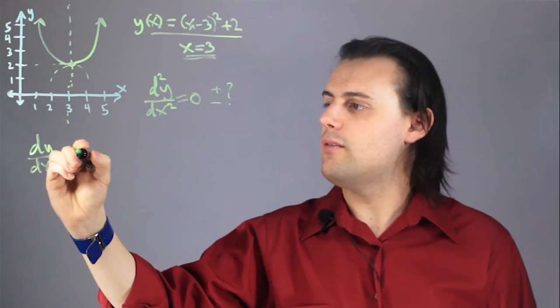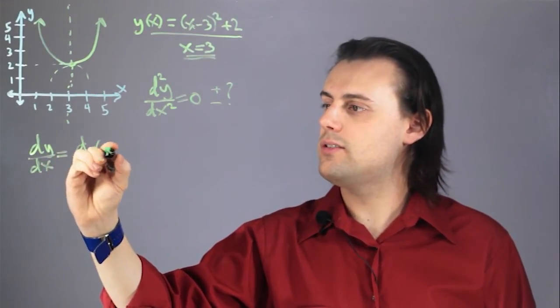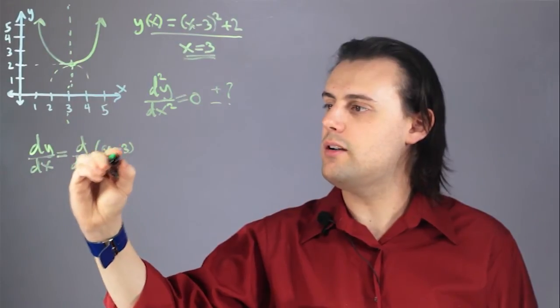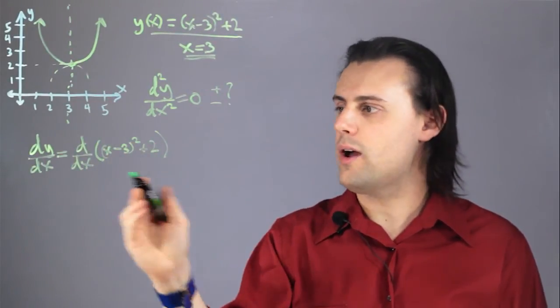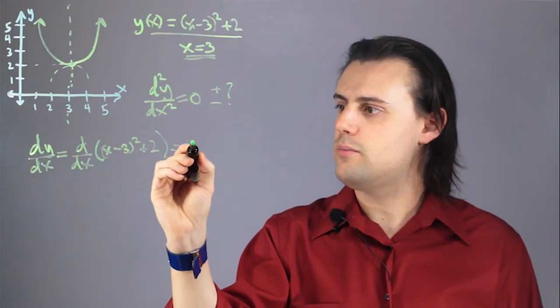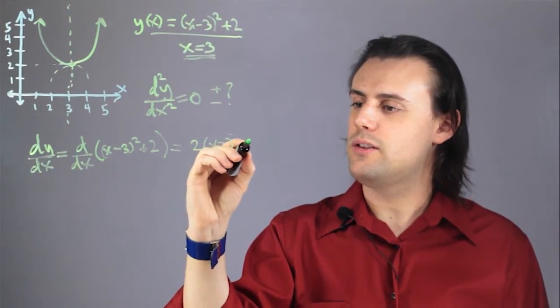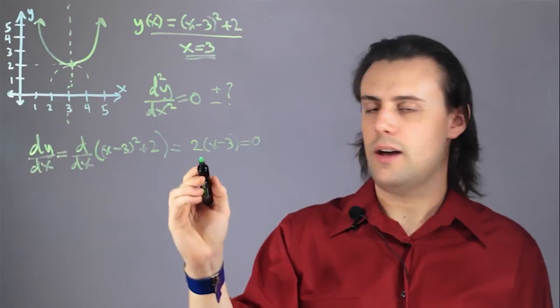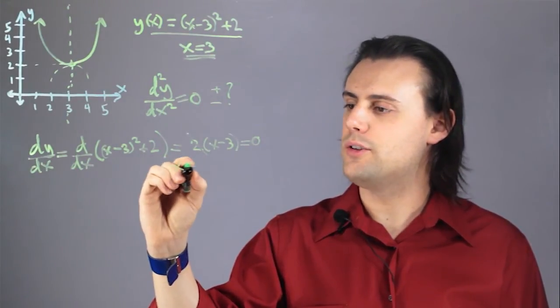...I have the derivative with respect to x of x minus 3 squared plus 2. This is a constant, so it goes away, and the derivative with respect to x of this first part of the equation is going to be equal to 2 times x minus 3. If I set that equal to 0, I can cancel out that 2, and I find that x is equal to 3.